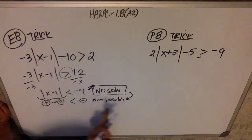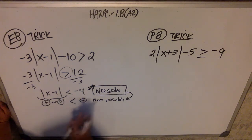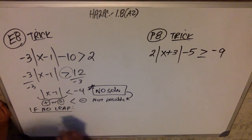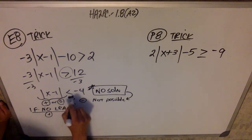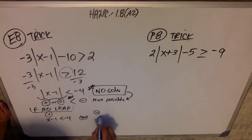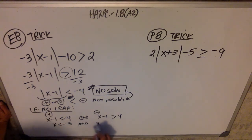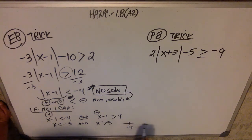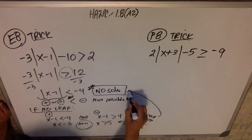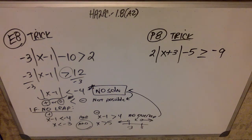If you didn't make that mental leap, you can still work through it. Noticing it's less than, so it's an 'and'. Positive case: x minus one is less than negative four. Negative case: x minus one is greater than positive four. Solving gives x is less than negative three, and x is greater than five. Looking for the overlap between these on a number line — there is no overlap, and it's supposed to be an 'and'. So no solution. It's no big deal if you didn't spot the shortcut — you still get no solution.